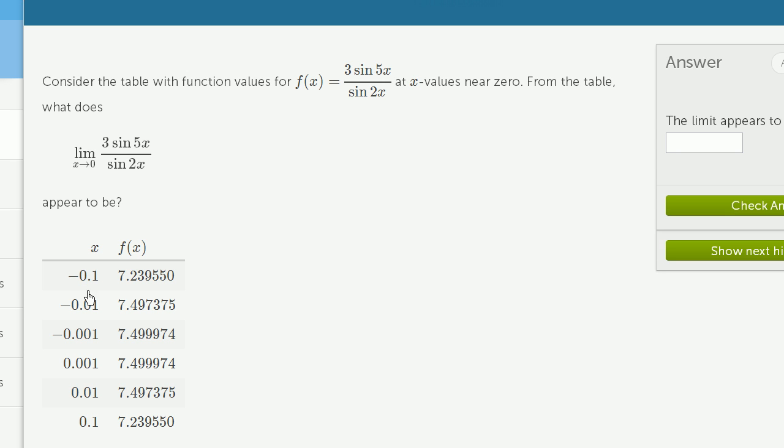They're approaching zero from below here. First at x = -0.1, f(x) is 7.239550. Getting even closer to zero, at x = -0.01, we're approaching from values less than zero, and now we've gone up to 7.497375. Even closer to zero, we get 7.499974.